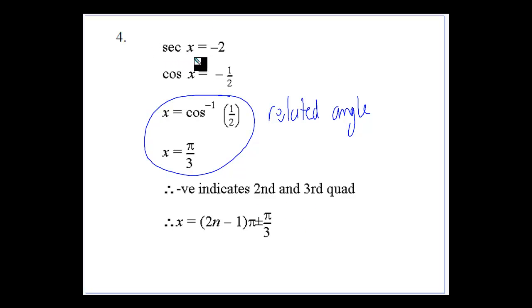Question 4 here, we've got secant of x is equal to minus 2, which really is a change. Cos of x is going to be equal to minus 1/2. So again, cos, negative, get our related angle. Inverse cos of 1/2 is π/3.